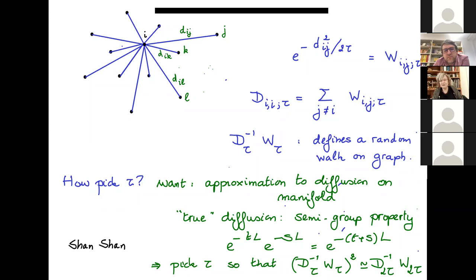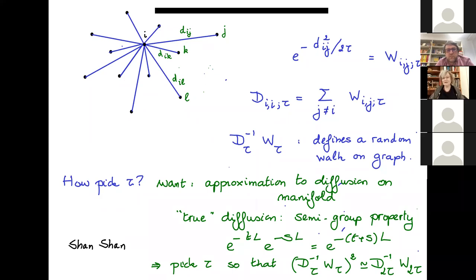You can't pick tau too small — then nothing diffuses and you stay where you are. You can't pick tau too large — then you give too much importance to Euclidean distances you know are wrong. You need this Gaussian decay of the matrix to downplay distances that are too large. A diffusion operator has a semigroup property: if you concatenate it for two different times, you get diffusion for the combined time. We pick tau so that the diffusion matrix squared is very close to what you'd get for two-tau; as long as that discrepancy is small, tau is reasonable.